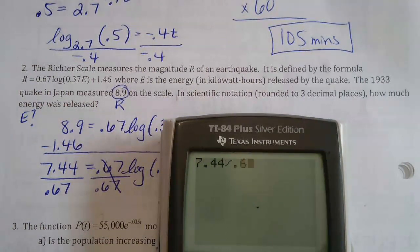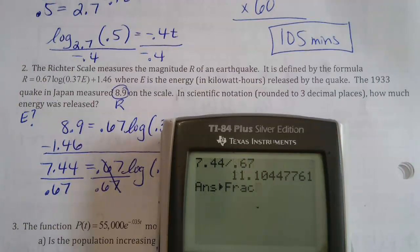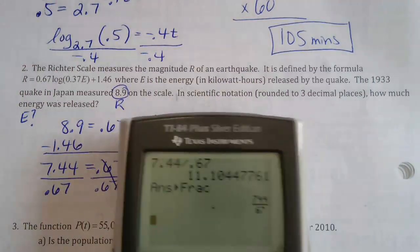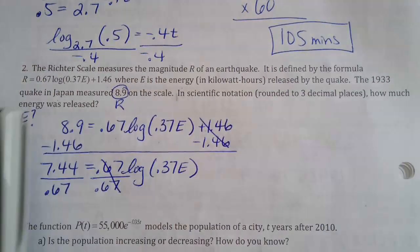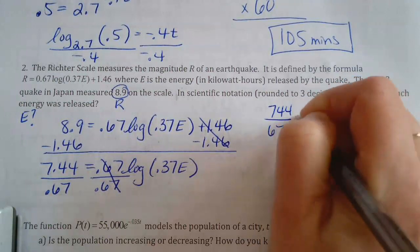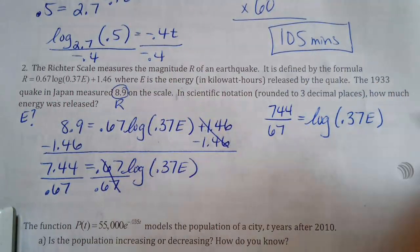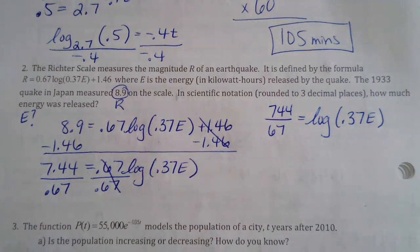7.44 divided by 0.67 — check if it math-fracs. It gives us 744 over 67, which equals log of 0.37E. We've finally isolated our log, so now we can lasso it.